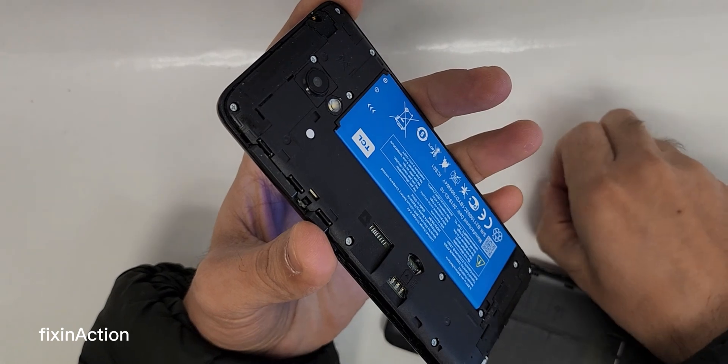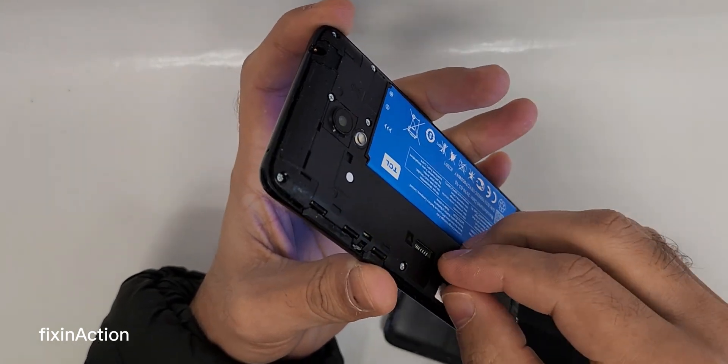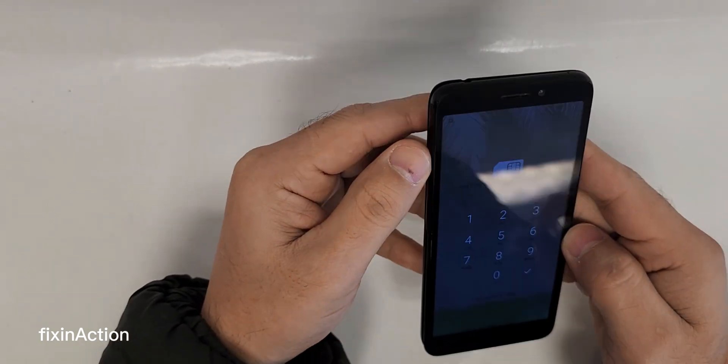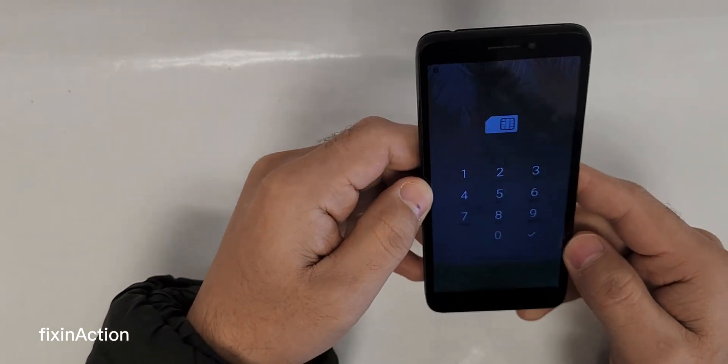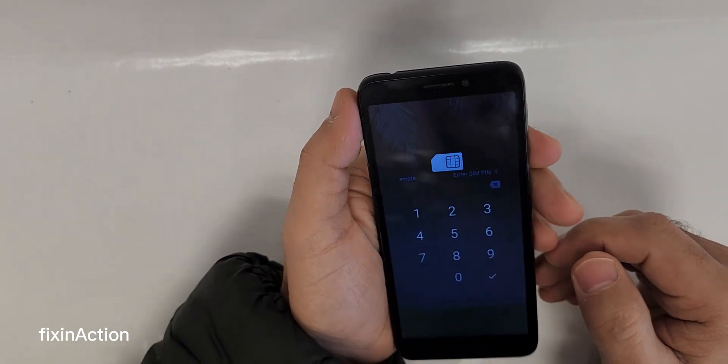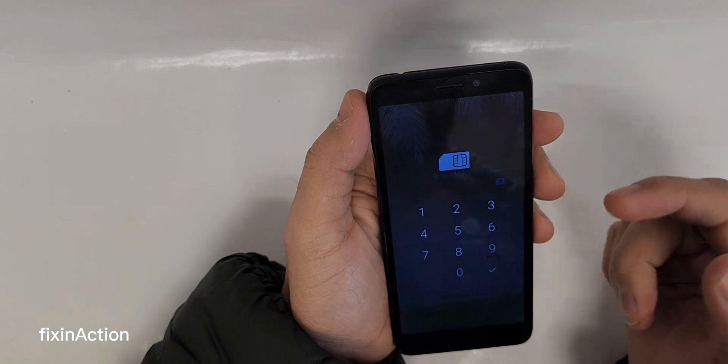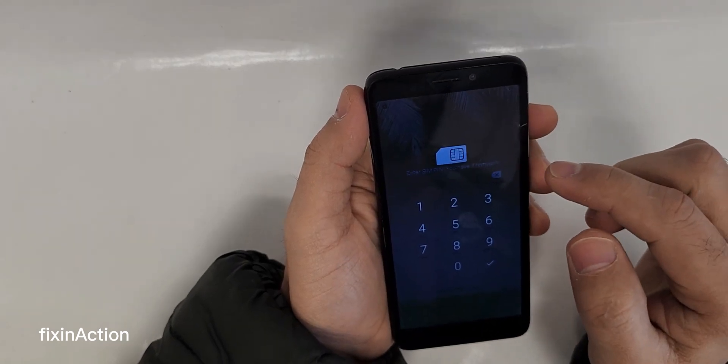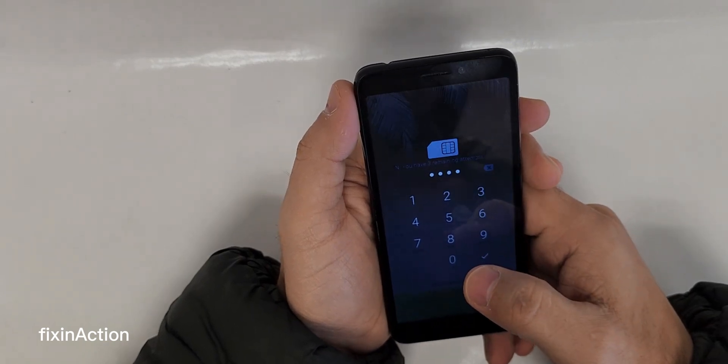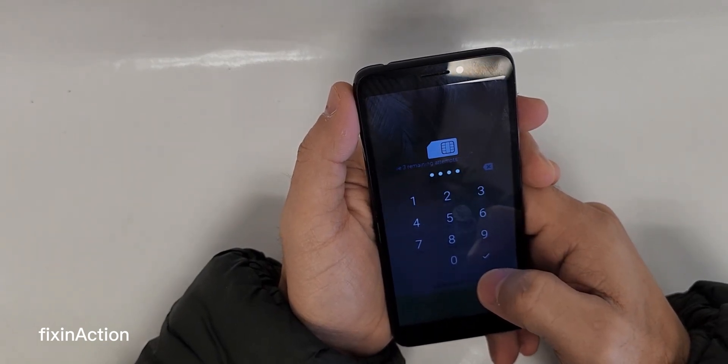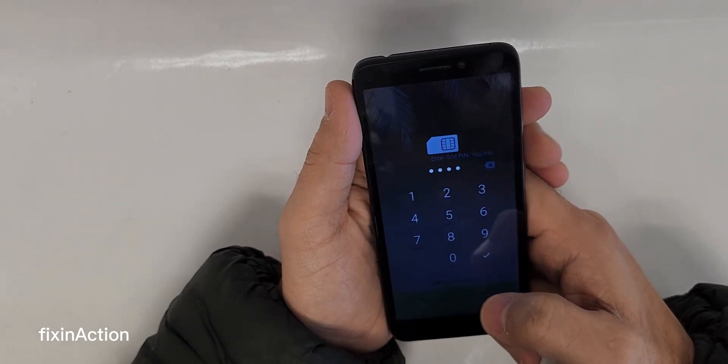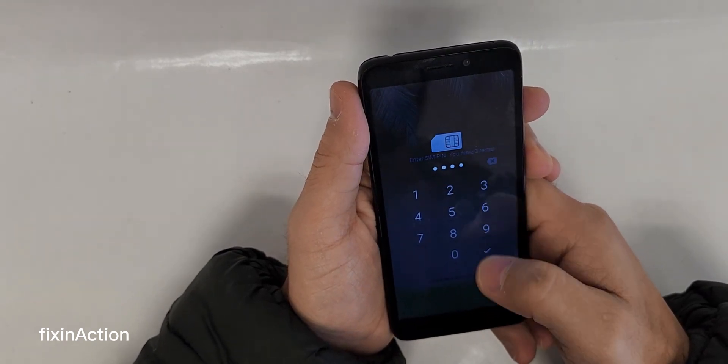Insert the locked SIM card into TCL A1 device or Alcatel A1 device. As you can see, it's asking for that SIM lock code. We have a code on the SIM card, it's 1234. Once you type that, then you have to press this check mark and press power button. Sometimes you don't have to.